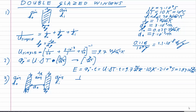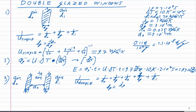For the total heat transfer coefficient we again use reciprocal addition: 1/U_double = 1/H_outside + 1/H_glass + 1/H_air + 1/H_glass + 1/H_inside. H_glass = lambda_glass / D_glass, and H_air = lambda_air / D_air. H_inside and H_outside are known, H_glass and H_air have been calculated, so we are ready to plug in the numbers.